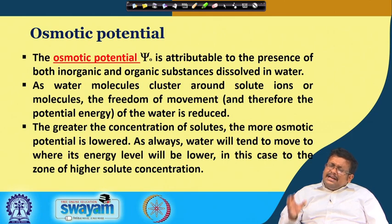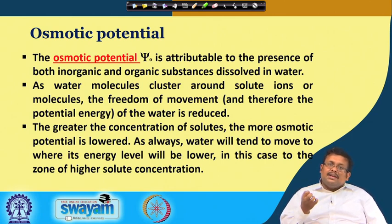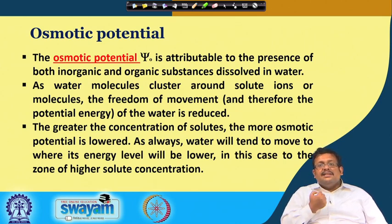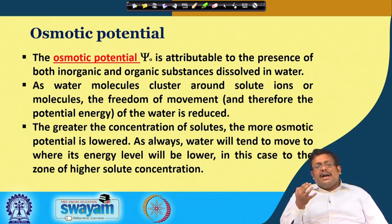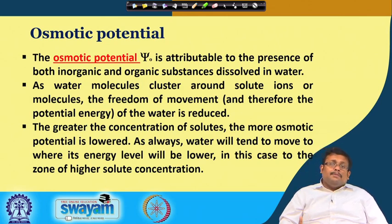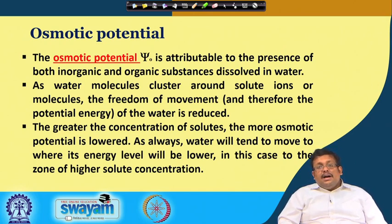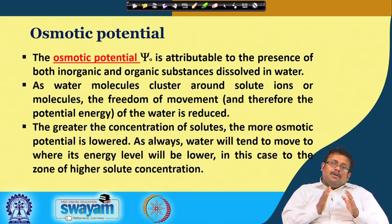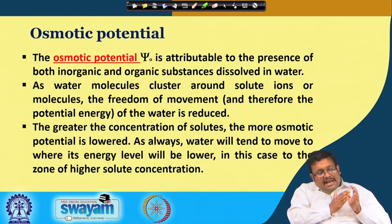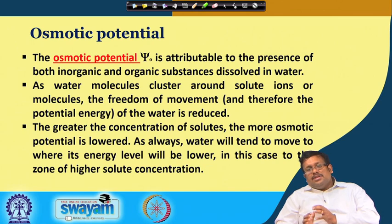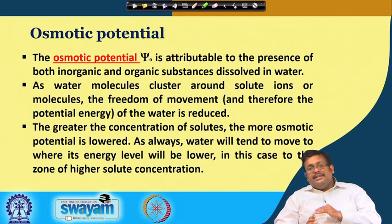In case of matric potential, it is basically due to the attraction of the soil matrix to water, restricting the freedom of the water to move, and as a result the potential energy decreases. This is why the potential energy of matric potential and osmotic potential is always negative relative to the reference state. The greater the concentration of solutes, the more osmotic potential is lowered, and water will tend to move to where its energy level is lower — to the zone of higher solute concentration. Water always moves from a zone of lower solute concentration to a zone of higher solute concentration, because higher solute concentration means lower osmotic potential, and water moves from higher energy state to lower energy state.